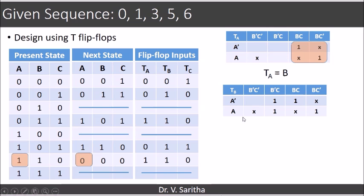And in the case of TB, TB is 1 in the case of 1, 5 and 6. So TB mapping goes like this and TB is B plus C.